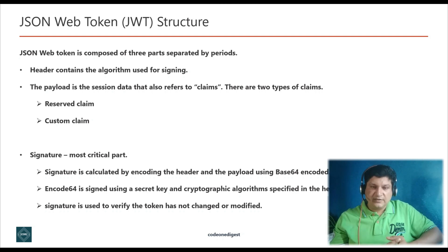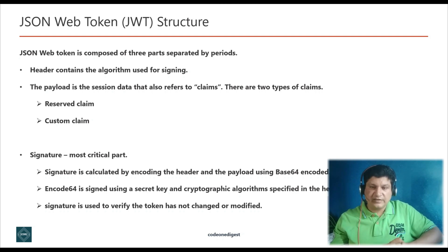The third part is the signature, which is the most critical part. The signature is calculated by encoding the header and the payload using Base64 encoding. The Base64-encoded result is then signed using a secret key and the cryptographic algorithm specified in the header section. The signature is used to verify that the token has not been changed or modified.